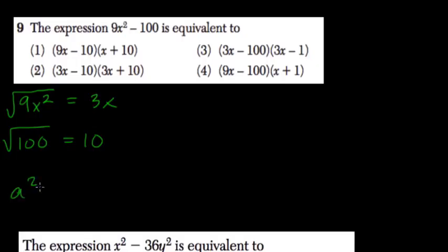In general, if you've got two squares and you're subtracting them, we call them the difference, or subtraction, of two squares. And then we can just factor it out really quickly.